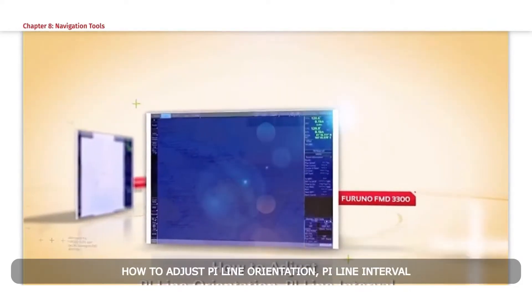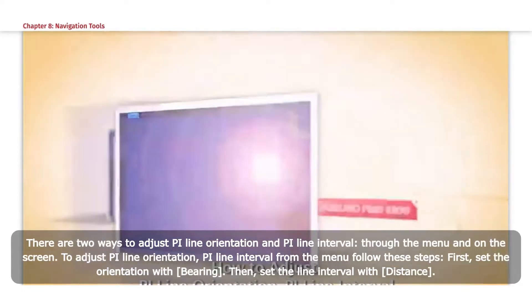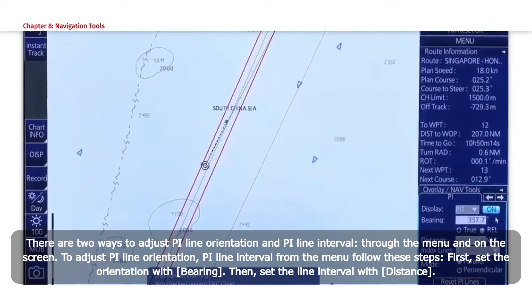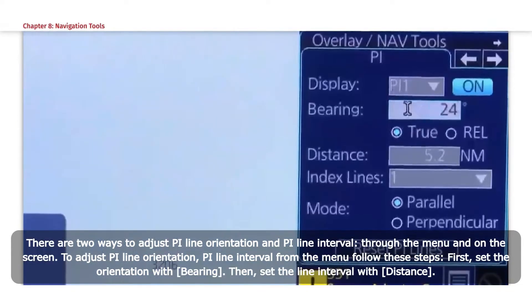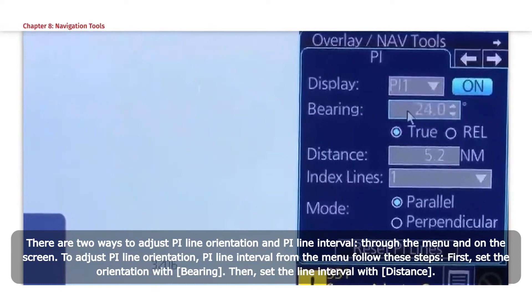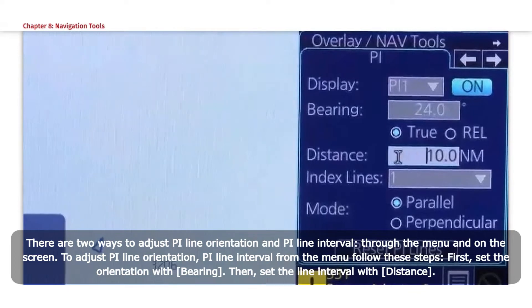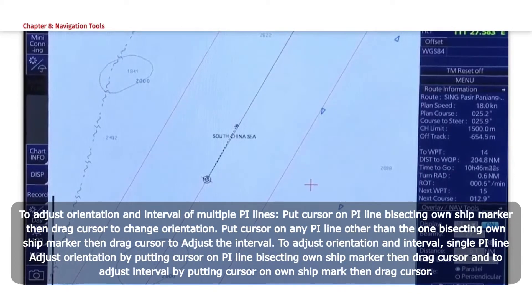How to Adjust PI Line Orientation: There are two ways to adjust PI Line Orientation and PI Line Interval - through the menu and on the screen. To adjust PI Line Orientation and PI Line Interval from the menu, first set the orientation with Bearing, then set the Line Interval with Distance to adjust orientation and interval of multiple PI Lines.